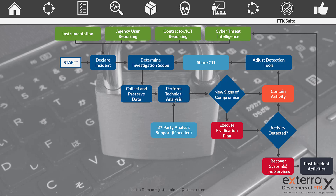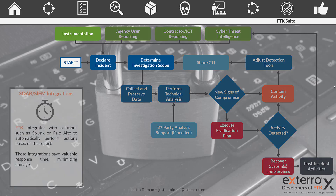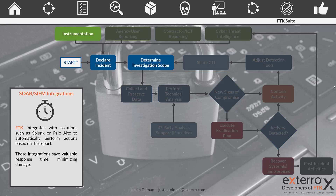Let's start with the playbook here. What we'll do is shade out and highlight different areas and talk about the aspects of FTK that will work with these different areas of the playbook. First off, before the incident happens, we have instrumentation like SOAR and SIEM solutions. Then once they detect something and an incident starts to occur, we're going to declare an incident and determine the investigation.